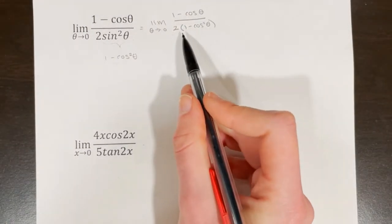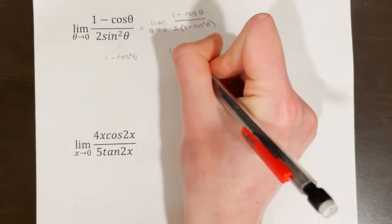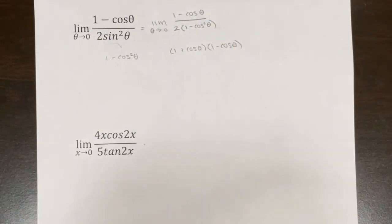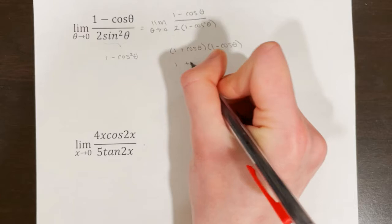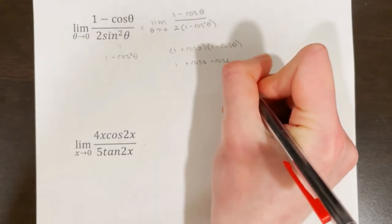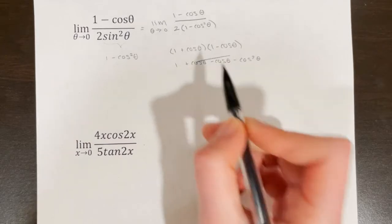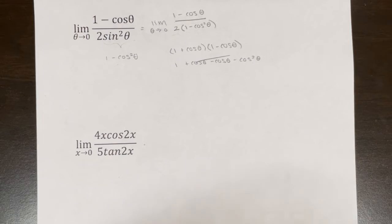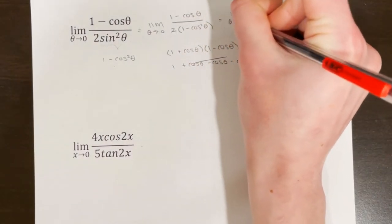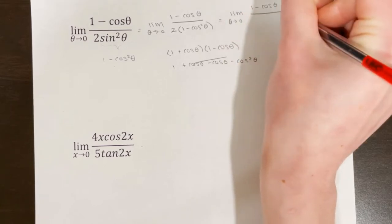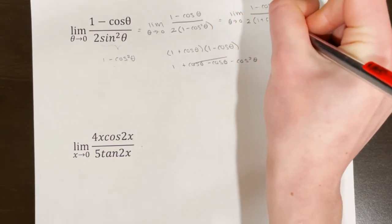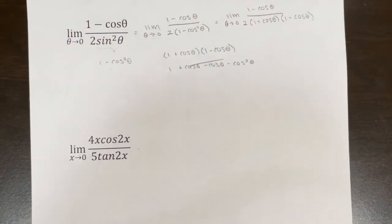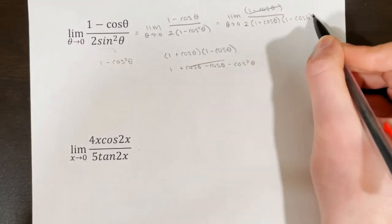Now I'm going to rewrite (1 minus cos²θ) as (1 plus cosθ)(1 minus cosθ). I'm allowed to do that because if I foil it out, I get 1 plus cosθ minus cosθ minus cos²θ — the middle terms cancel and I get 1 minus cos²θ, which is my original expression. So this becomes the limit as θ approaches 0 of (1 minus cosθ) over 2(1 plus cosθ)(1 minus cosθ). Now I have a common factor in the numerator and denominator — (1 minus cosθ) cancels.